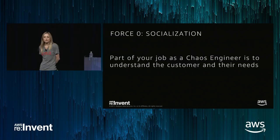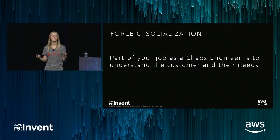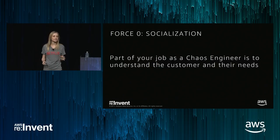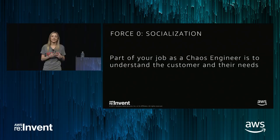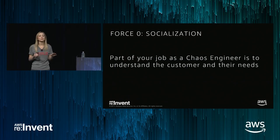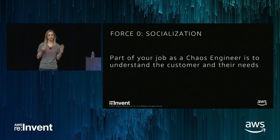I would strongly advocate that part of your job as a chaos engineer, or as an SRE, or as the people developing internal tools for chaos experiments, is to understand the customer and their needs — both your company's customer and your internal customers, your coworkers. Understand what their concerns are, understand what you're optimizing for. In the big picture, you're optimizing for availability and for your company's customer happiness.